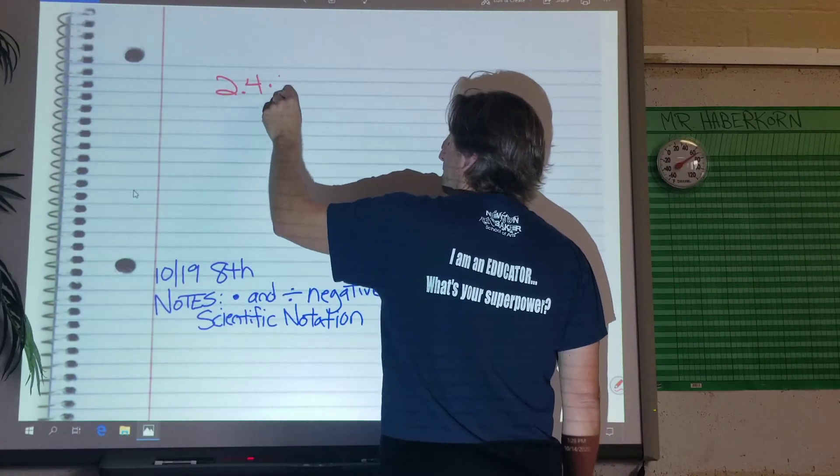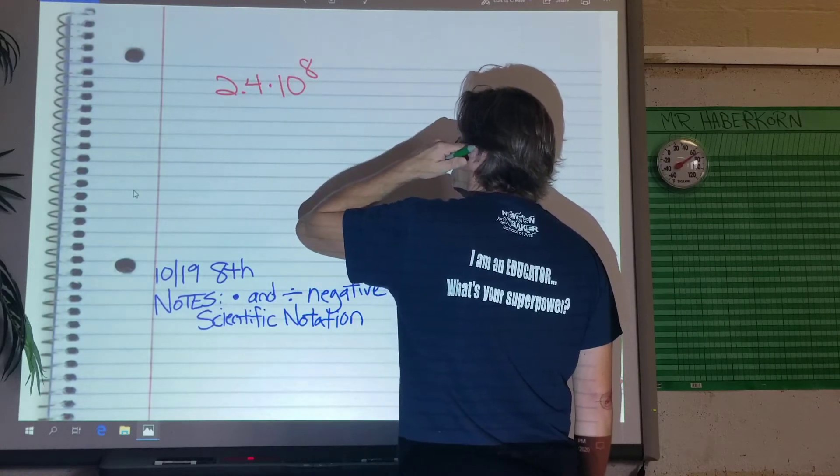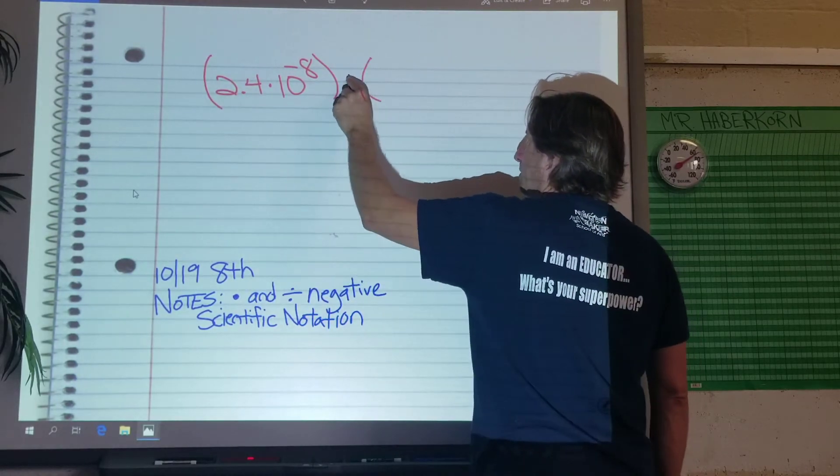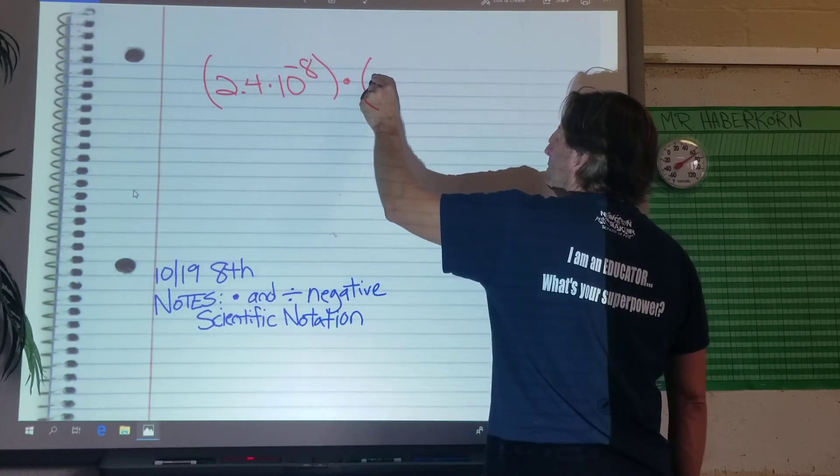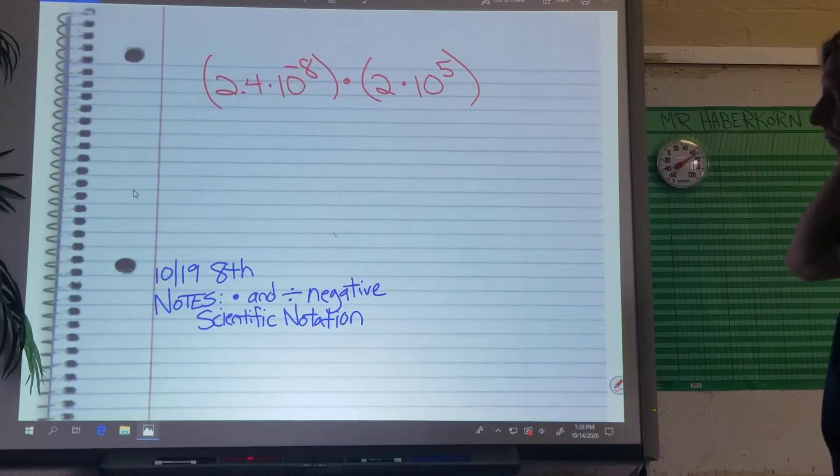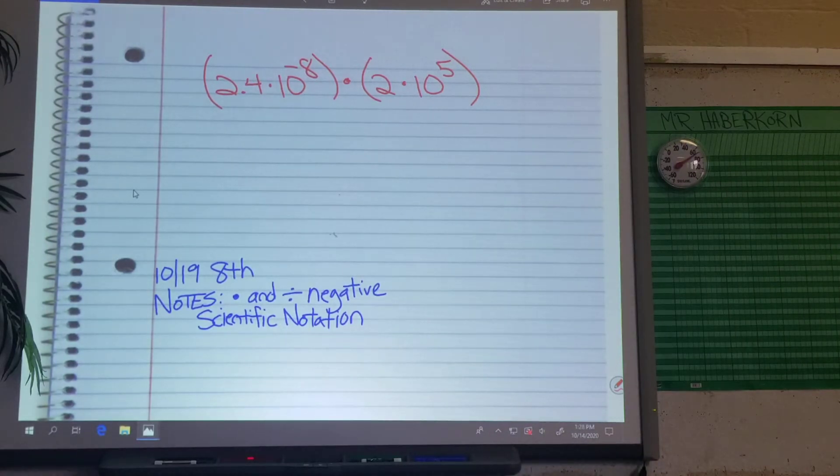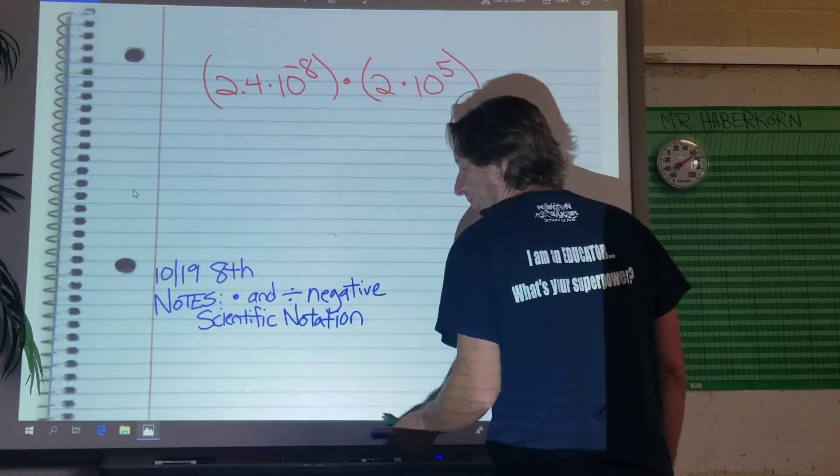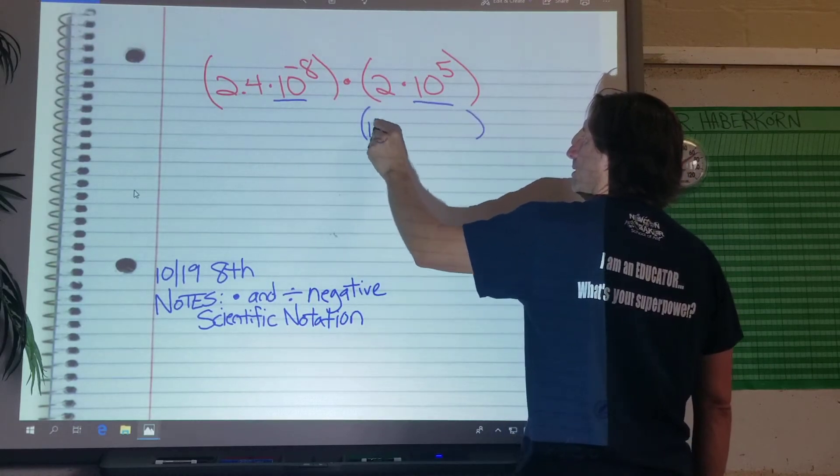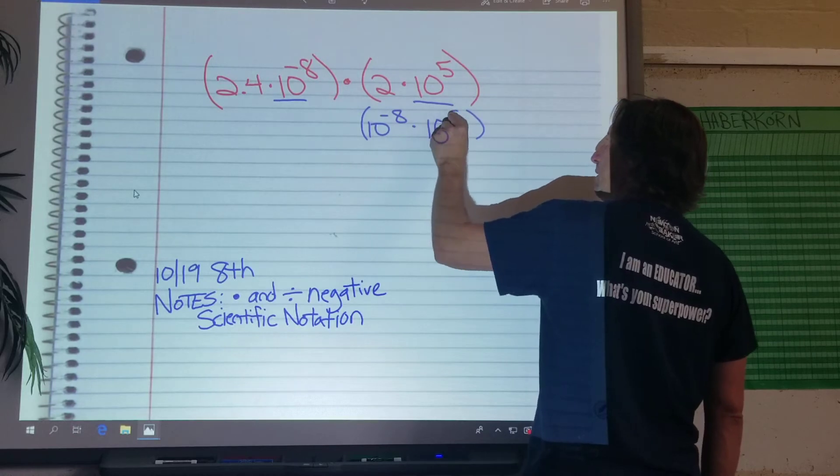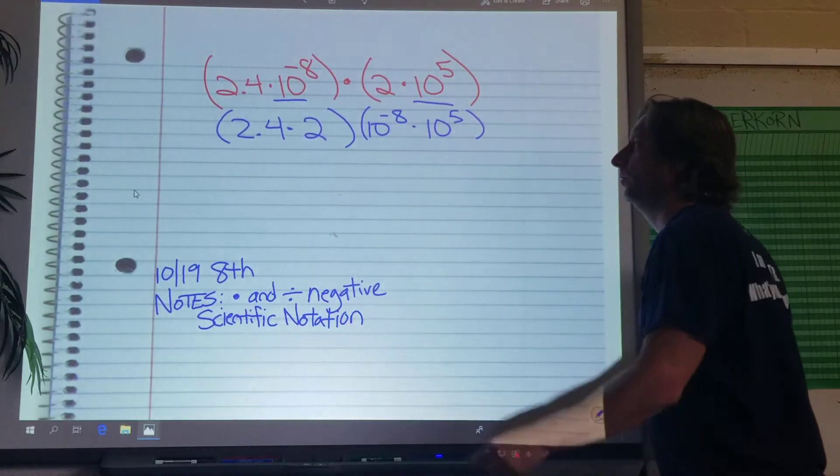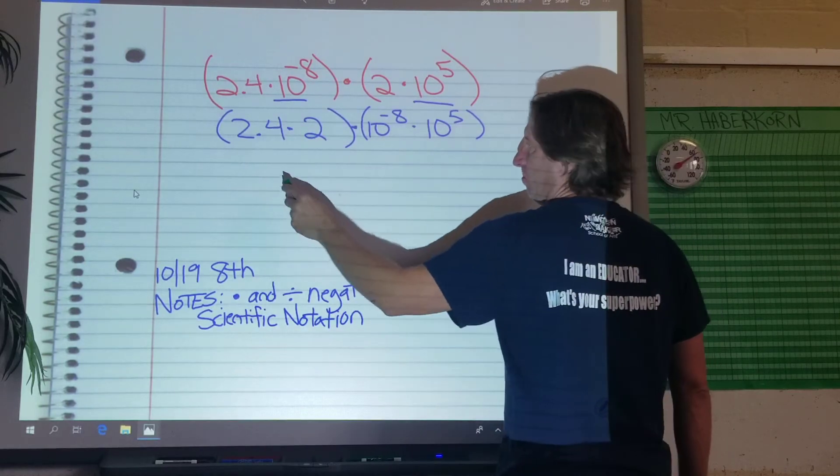All right, so let's take a look at one. 2.4 times 10 to the fifth. All right, so a little bit longer problem. So we have some negatives in there to think about. Either way, we're going to do it the same way. We're going to put our exponents in the same set of parentheses. So 10 to the negative eighth times 10 to the fifth. Over here, I have 2.4 times 2. All right, so this part's easy. 2.4 times 2, 4.8.